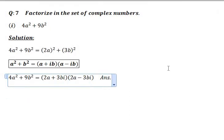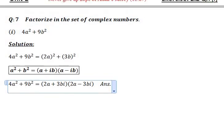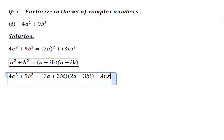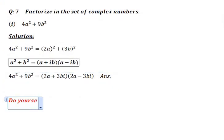So you can say that this is the factorization of 4a² + 9b². Okay. If we multiply again, then you can easily get 4a² + 9b². So that's why it is said that factorization is a reverse process of multiplication.